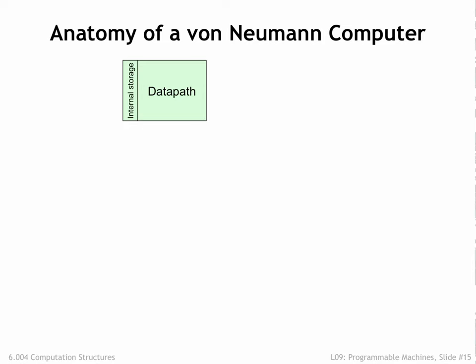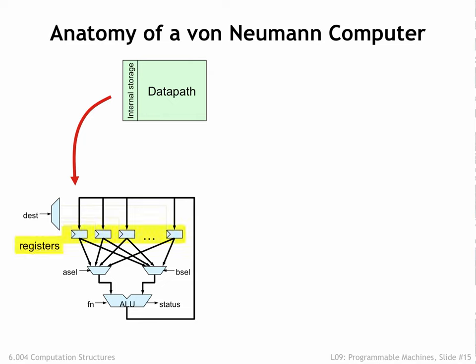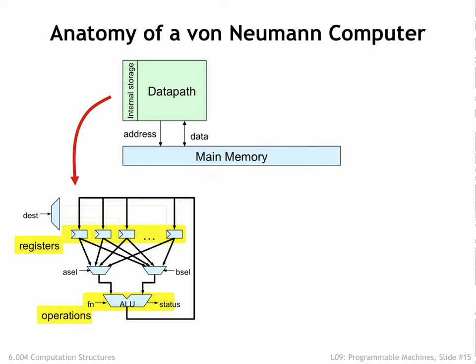So this is the digital system we'll build to perform computations. We'll start with a data path that contains some number of registers to hold data values. We'll be able to select which registers will supply operands for the arithmetic and logic unit that will perform an operation. The ALU produces a result and other status signals. The ALU result can be written back to one of the registers for later use. We'll provide the data path with the means to move data to and from main memory. There will be a control unit that provides the necessary control signals to the data path. In the example data path shown here, the control unit would provide A-cell and B-cell to select two register values as operands and DEST to select the register where the ALU result will be written.